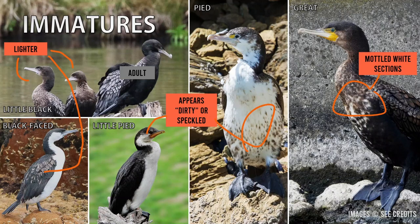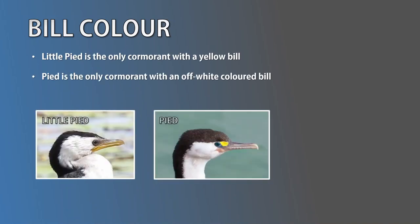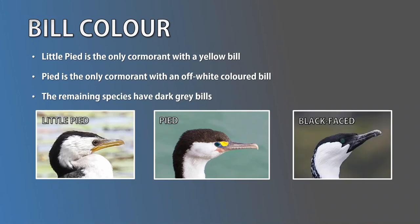Bill color remains consistent throughout a cormorant's life and is a very helpful way to differentiate species, especially the black and white ones. The little pied is the only cormorant with a yellow bill. The Australian pied has an off-white or flesh-colored bill. The remaining species have dark gray bills.